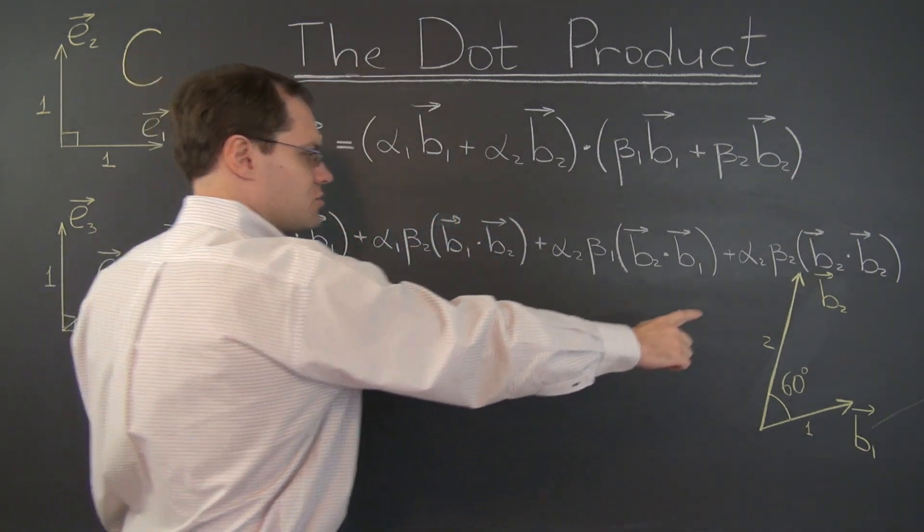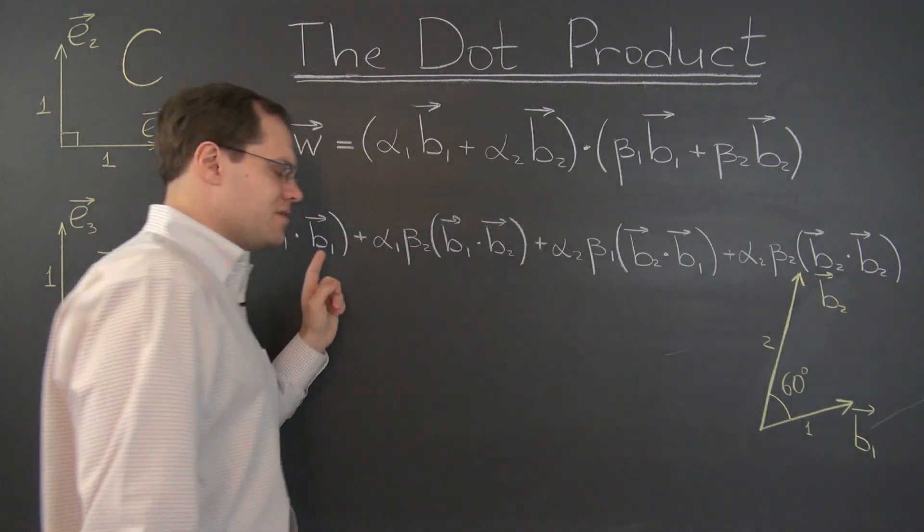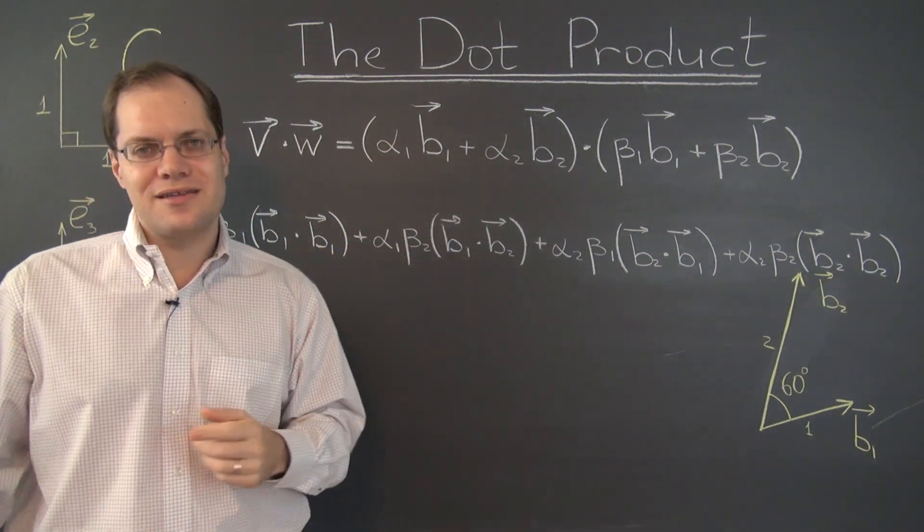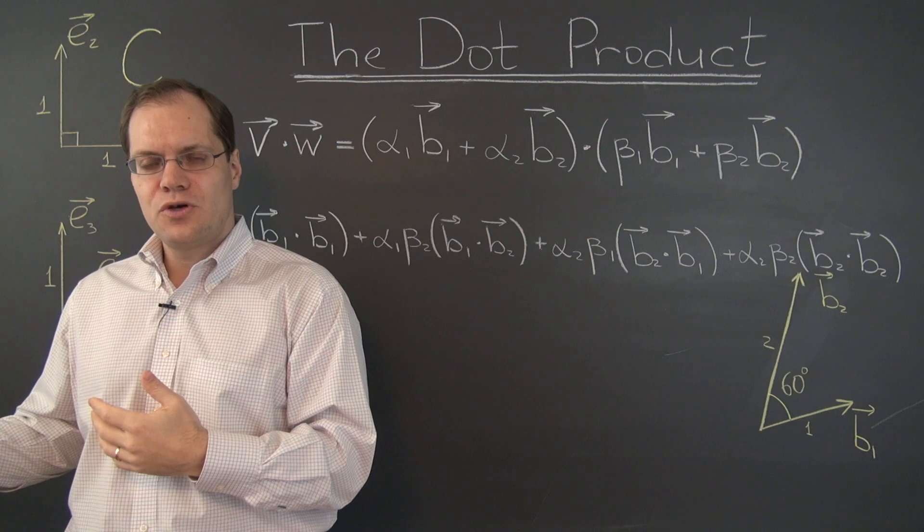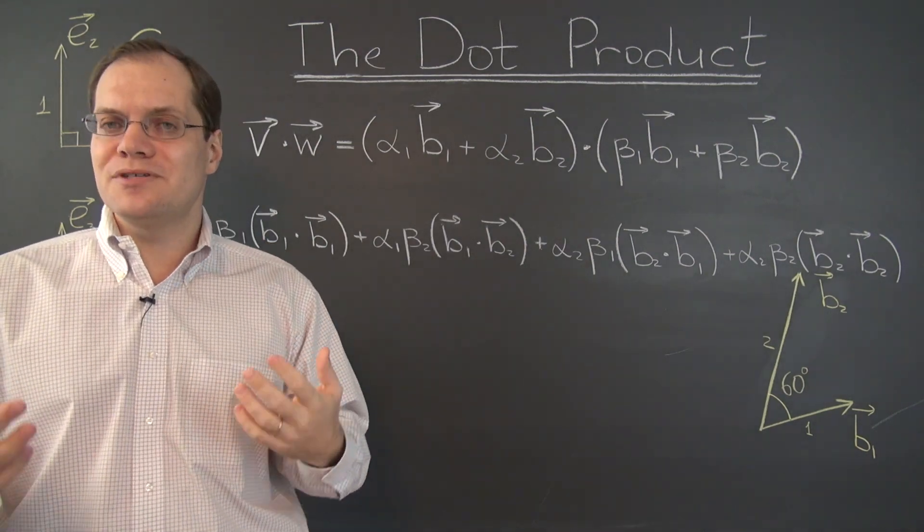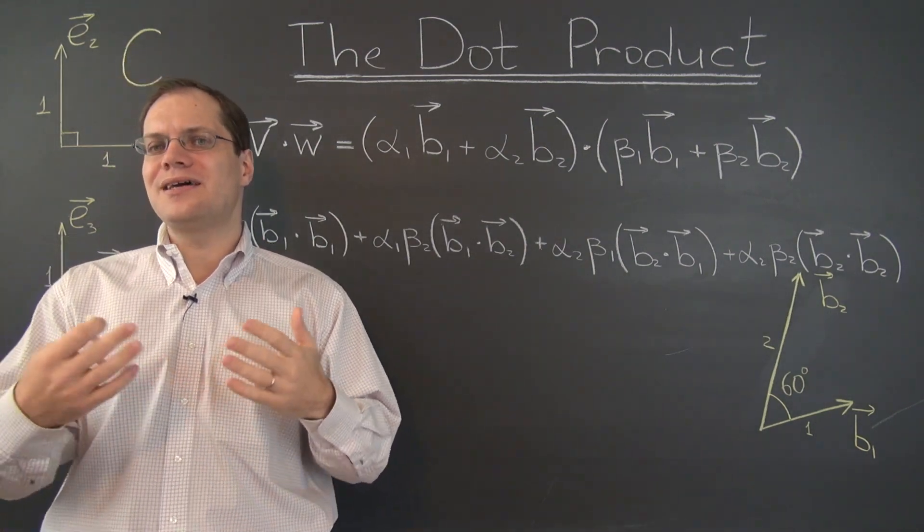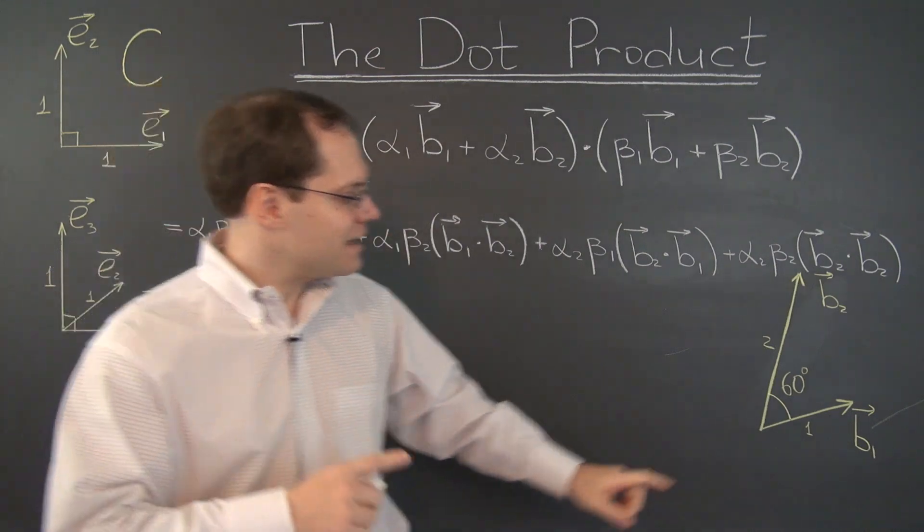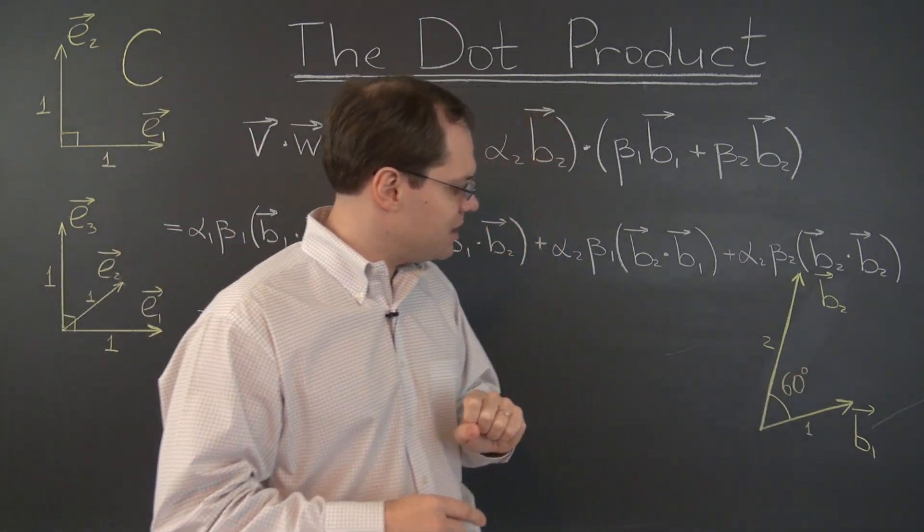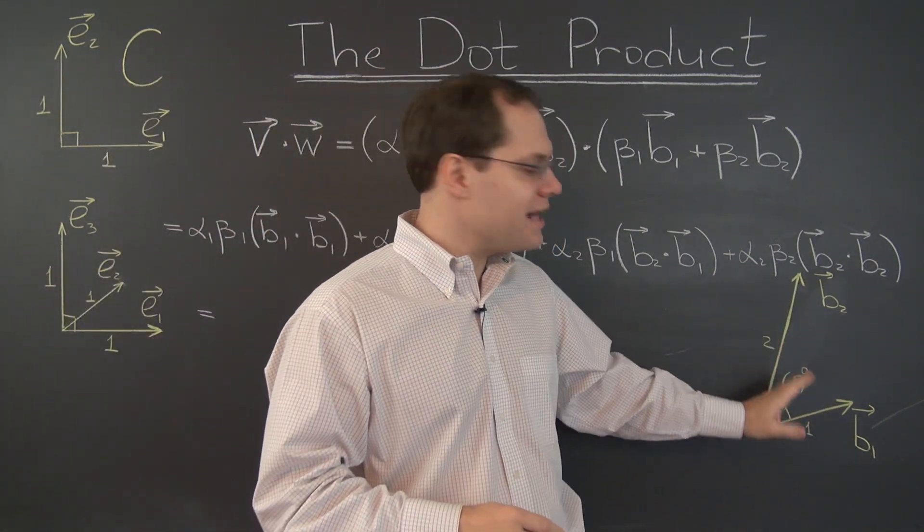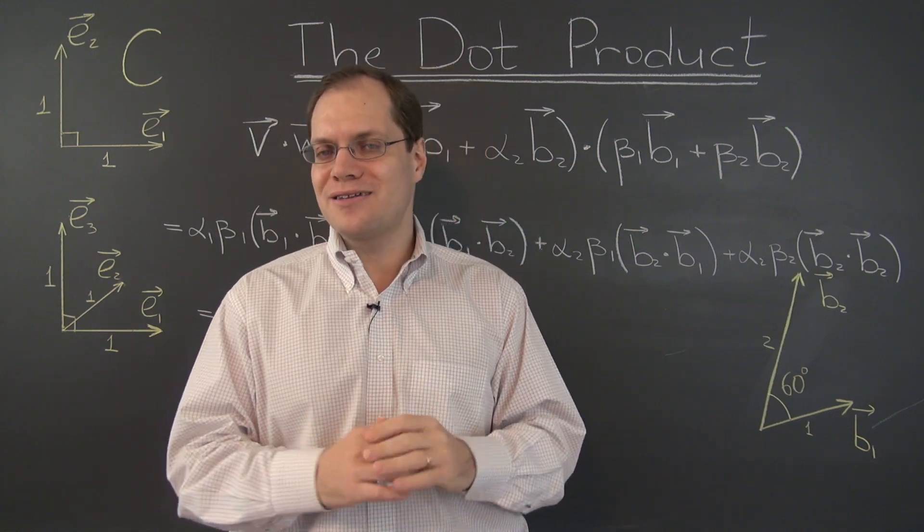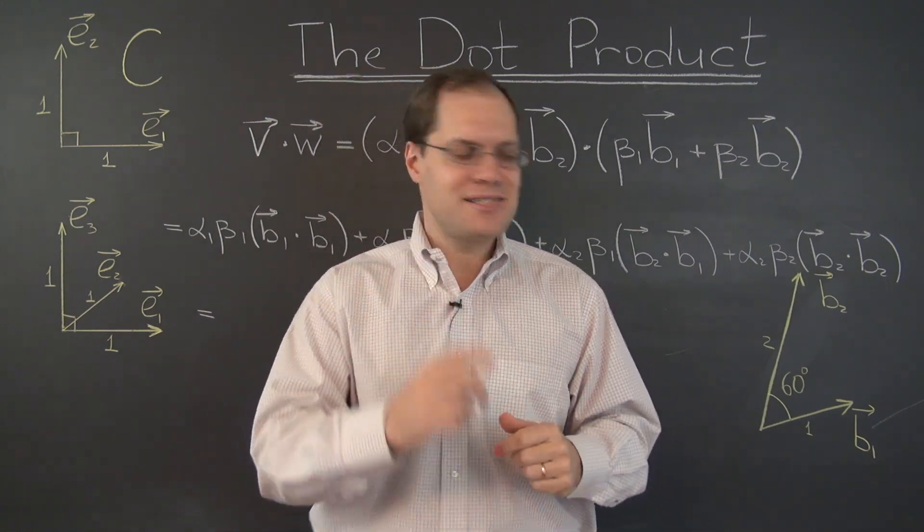And these two terms greatly simplified because both of the figuring dot products here were one because the length of each vector was one. So right now we're simply not able to make those same statements, but we can make analogous statements. In fact, in the case of this relatively simple basis, we can still evaluate all of these dot products without any problems. So let's actually do that.